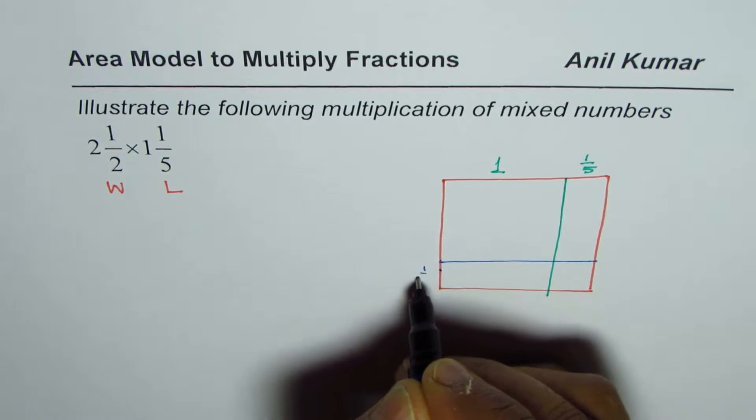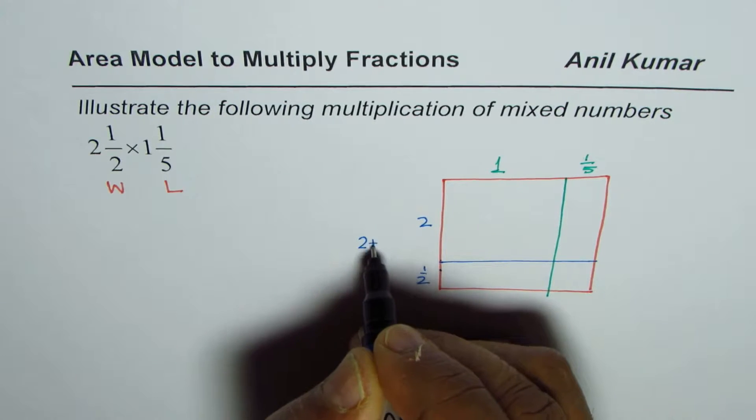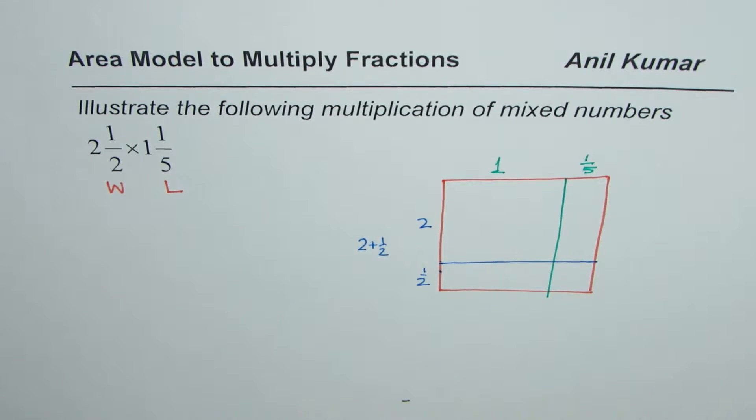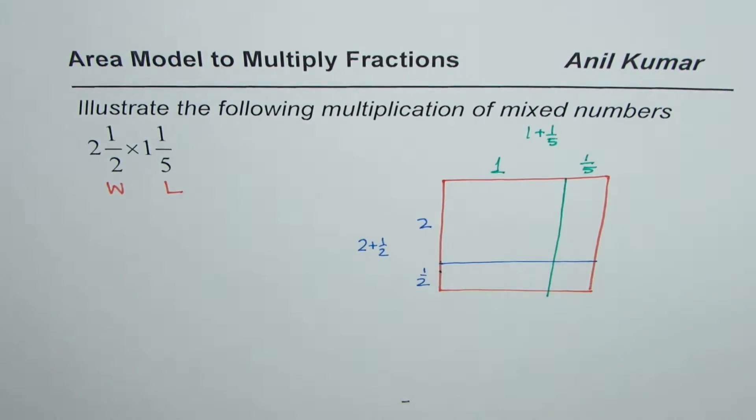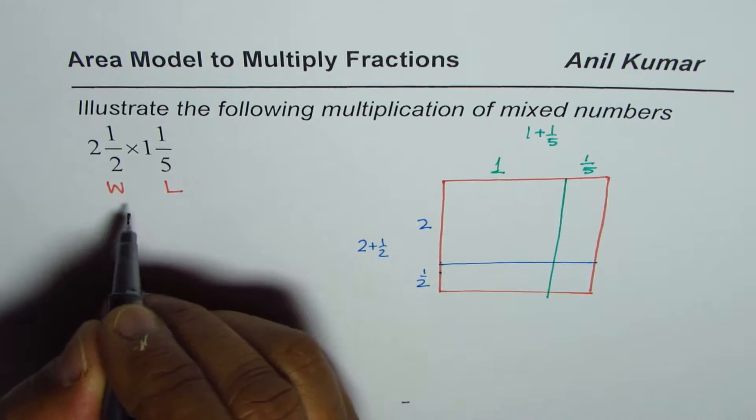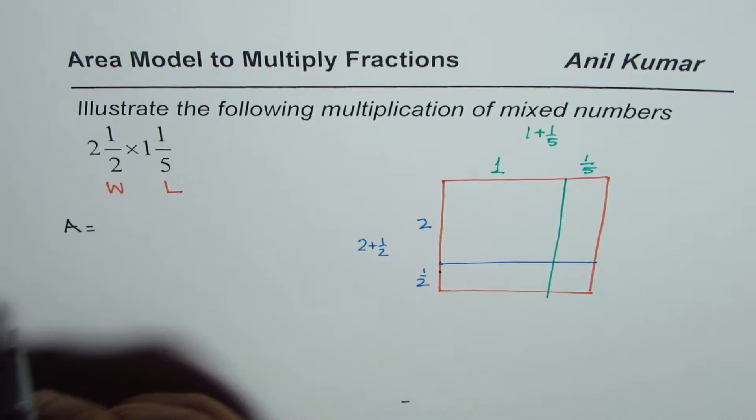This side is 2 plus ½ which is 2½, and that other side which I'm calling length is 1 plus ⅕. As you know, area is length times width, so area is their product.